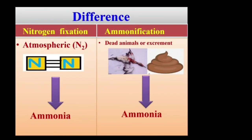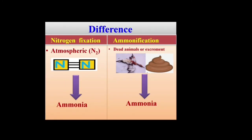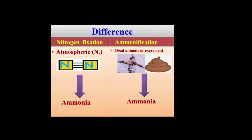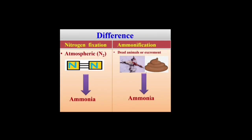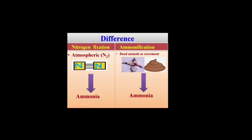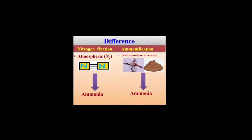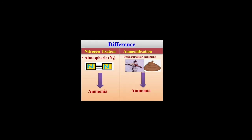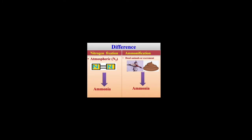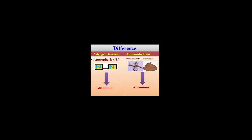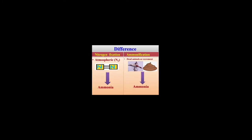The difference between nitrogen fixation and ammonification: in nitrogen fixation, we make ammonia from free nitrogen present in the atmosphere, while in ammonification, we make ammonia from the dead bodies of plants and animals. So this is the major difference between nitrogen fixation and ammonification.